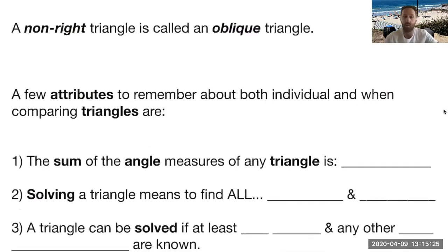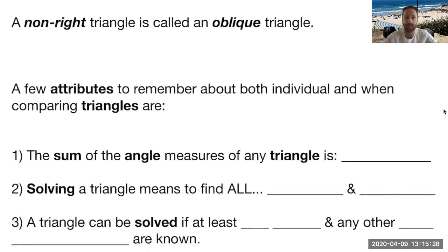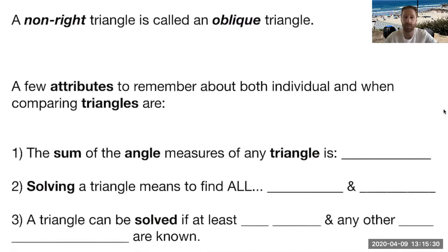First of all, we need to talk about what an oblique triangle is. Basically that is our fancy math term for something that is not a right triangle. That kind of throws a wrench into things because obviously all the topics we've been dealing with from SOHCAHTOA on all of our trig functions, it was imperative and only worked if we had a right triangle. So now we're going to be dealing with non-right triangles, again called oblique, and we're still going to be able to use our trig functions in a different way.